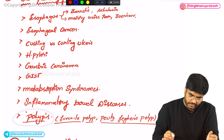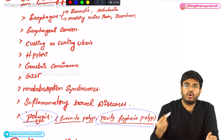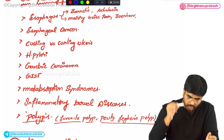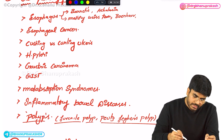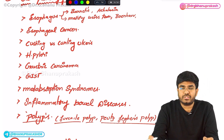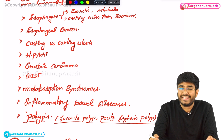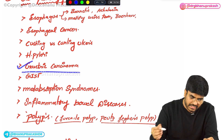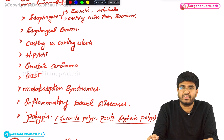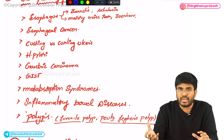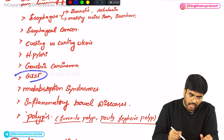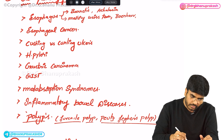For Peutz-Jeghers polyps, know the image of the lips with pigmented dots — that image-based question is very important. The histological image of juvenile polyps is also important. Know about gastric carcinoma: which ulcers — duodenal or gastric — have high risk of turning malignant. Know the different types of gastric carcinoma, including diffuse type with linitis plastica, the leather bottle appearance, and signet ring cells on histology. Also know about gastrointestinal stromal tumors and malabsorption syndromes.